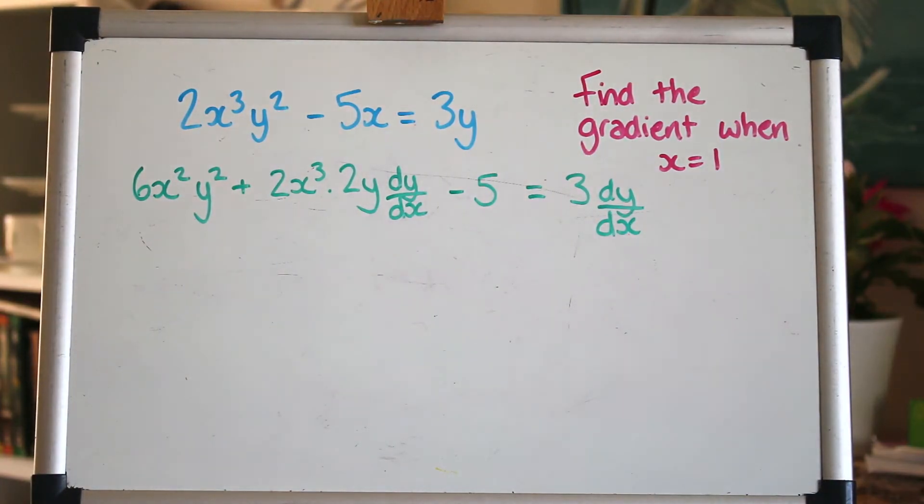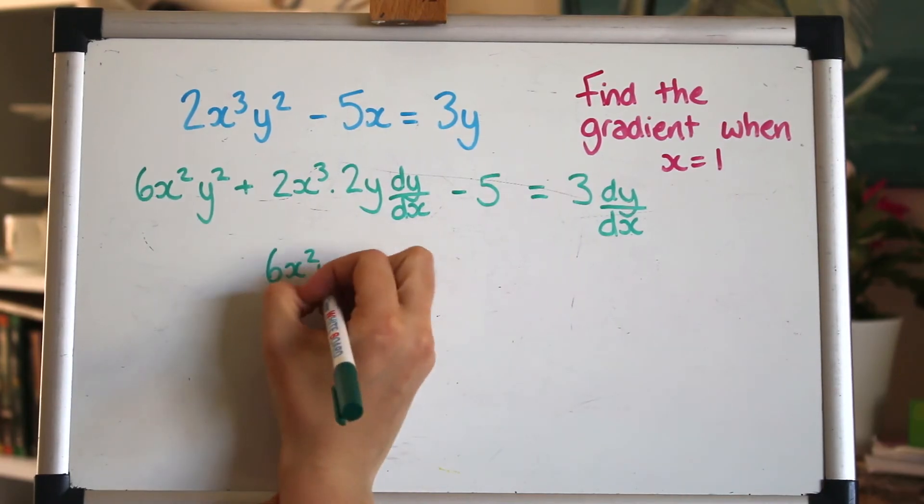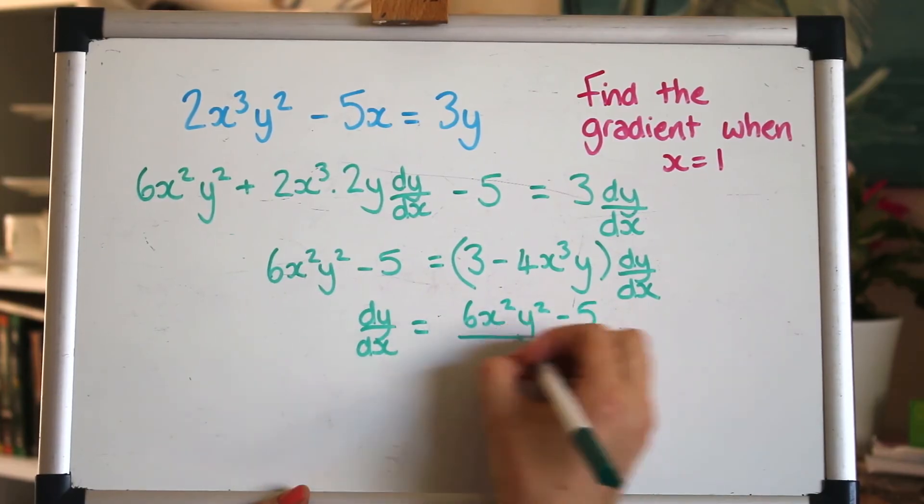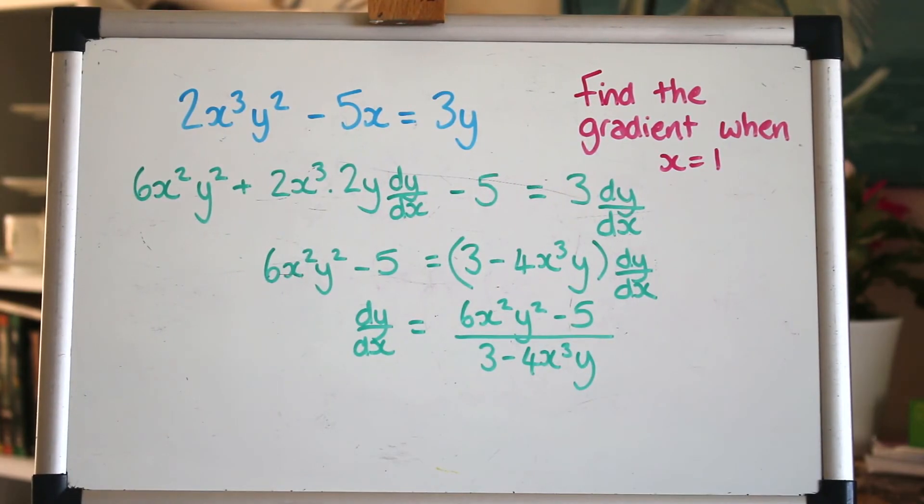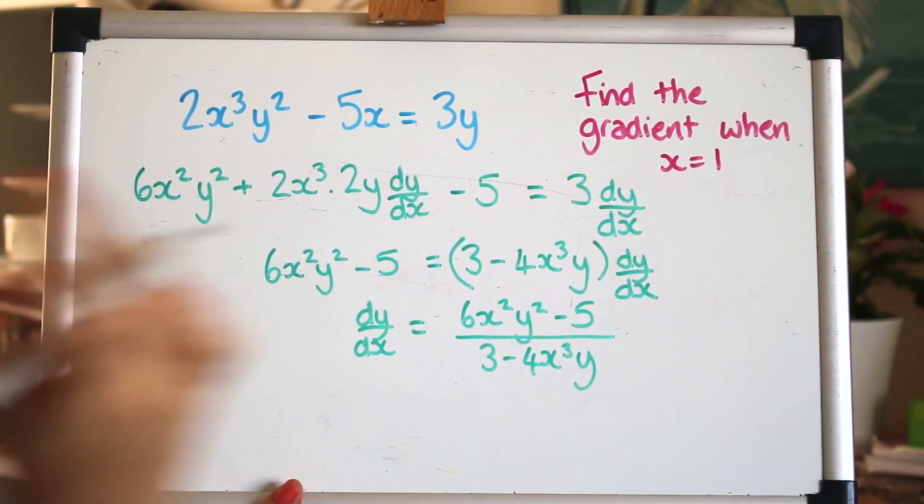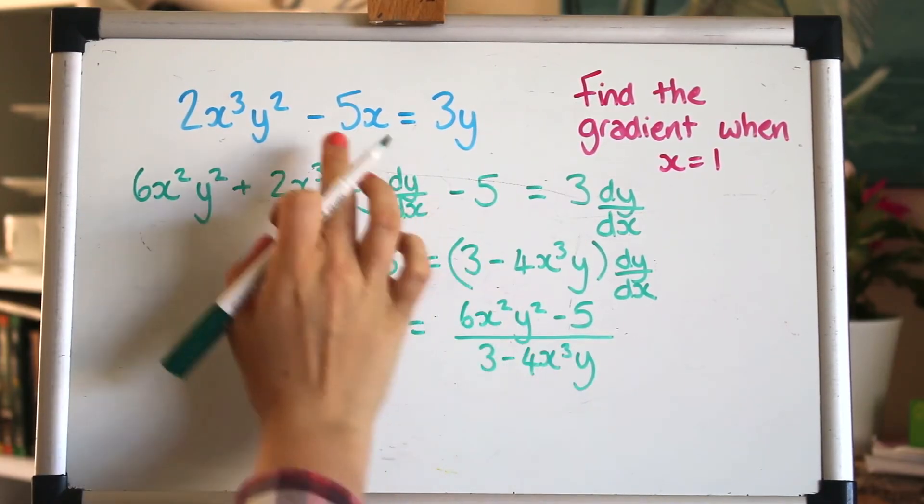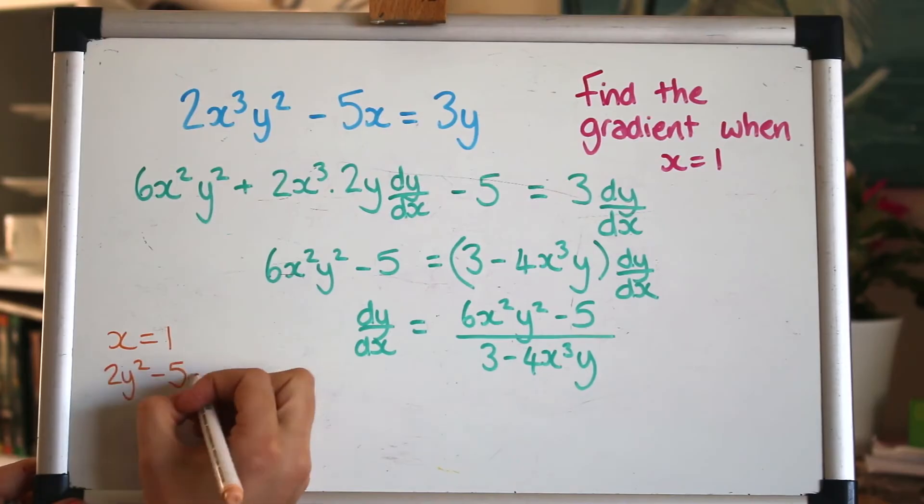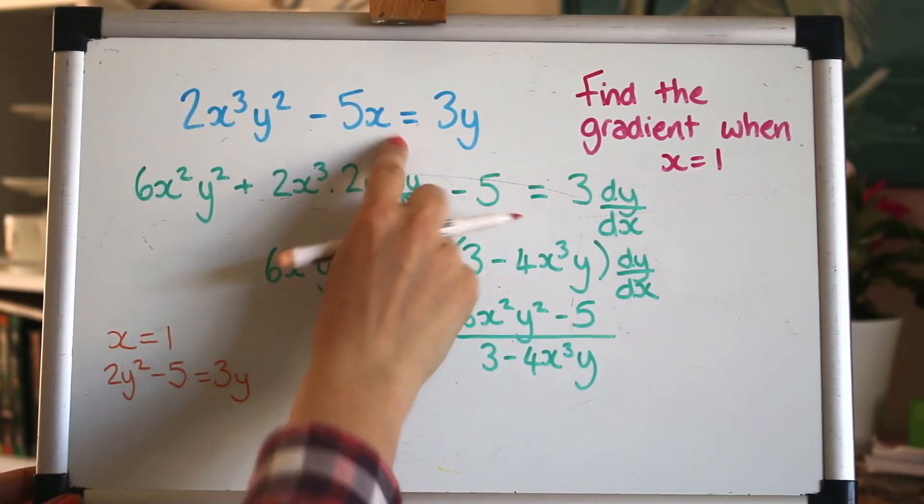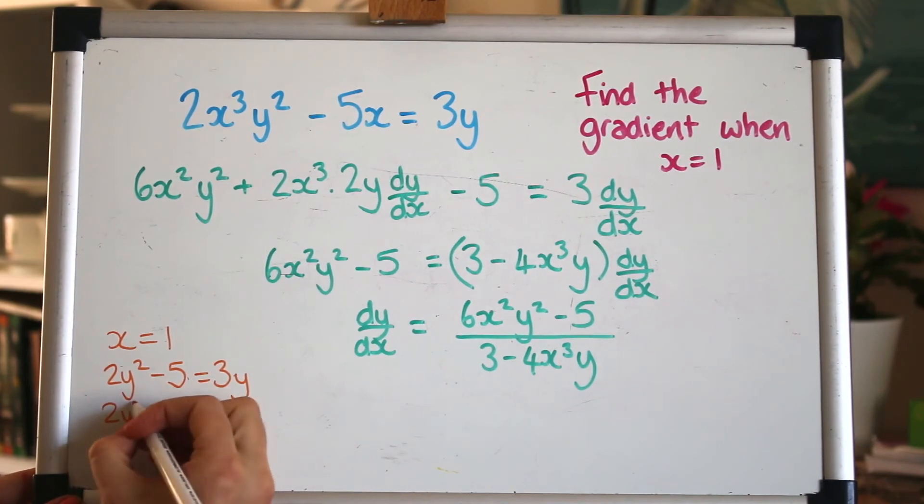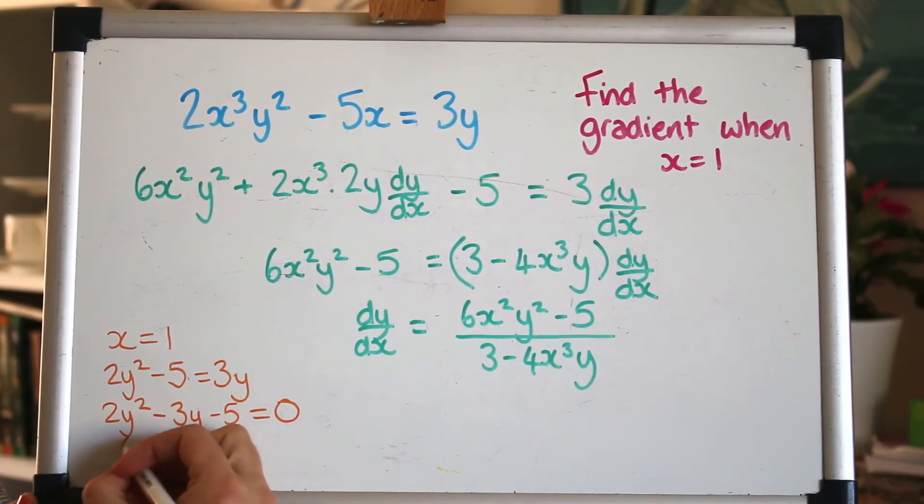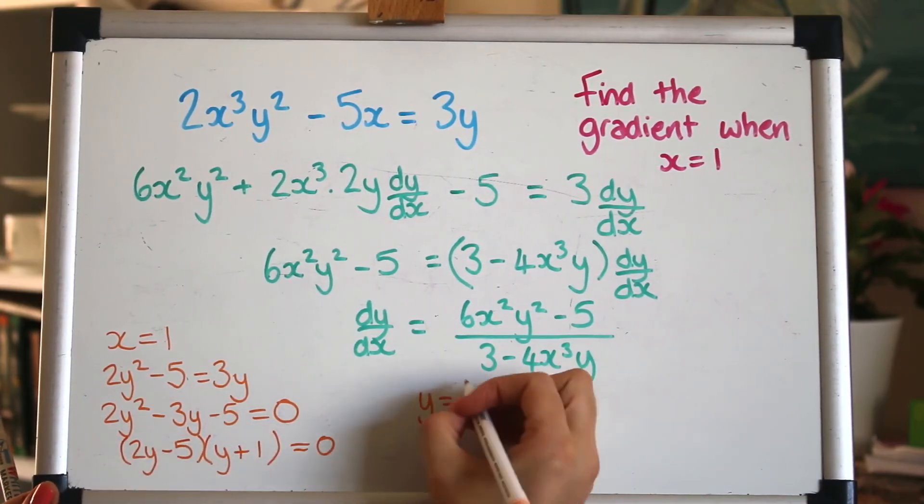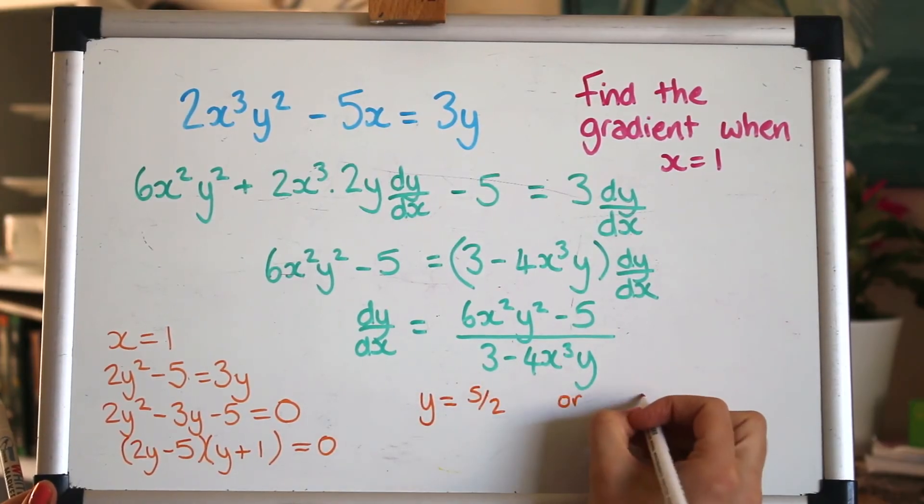Fab, let's simplify and collect up the dy by dx to make that the subject. Okay and then we can put in x as one to get the gradient. We also need to put in a y value of course don't we, so we'll have to get that from the original expression to find what y is when x is 1. So that's the expression I get when x is 1 in the original and that looks like a quadratic. I hope you can see this orange pen okay. So I get two answers here, I get either 5 over 2 or minus 1.